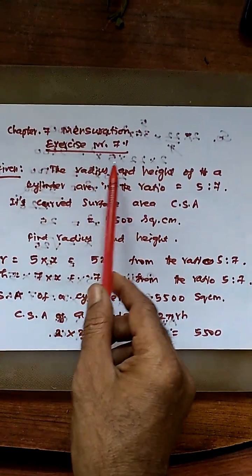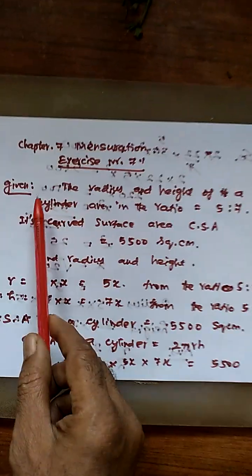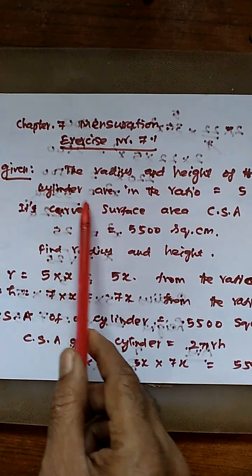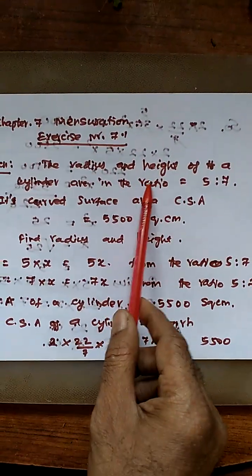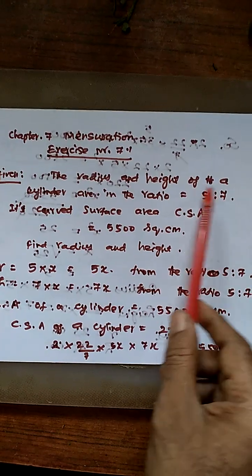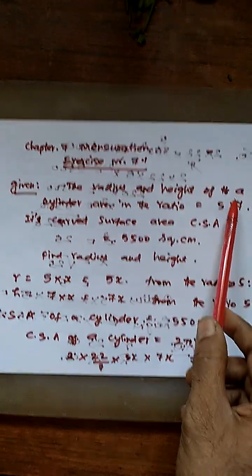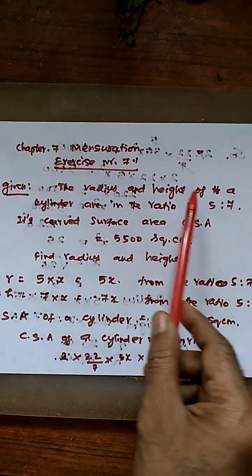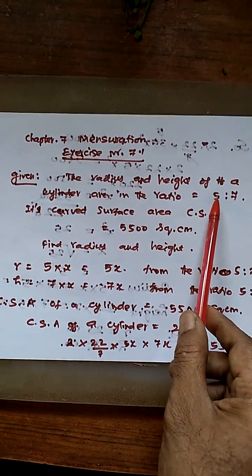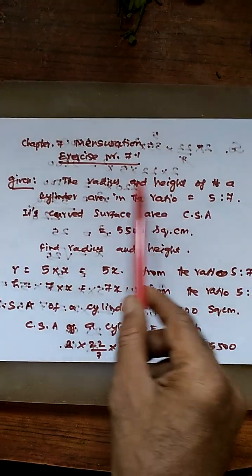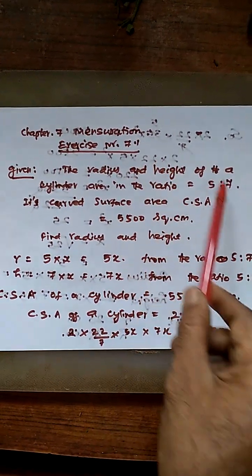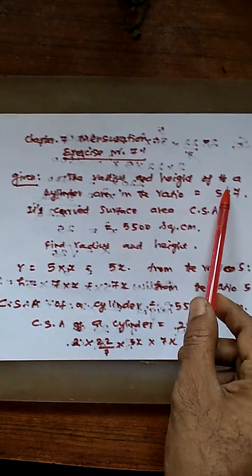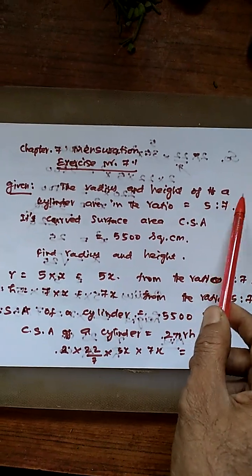The radius and height of a cylinder are in the ratio 5 to 7 respectively. Radius is 5 times, Height is 7 times. This is Radius and this is Height.